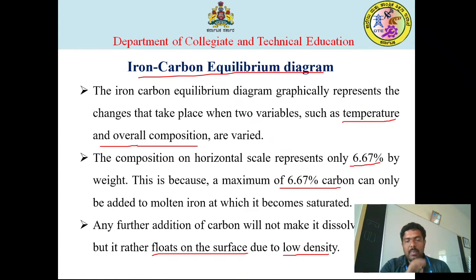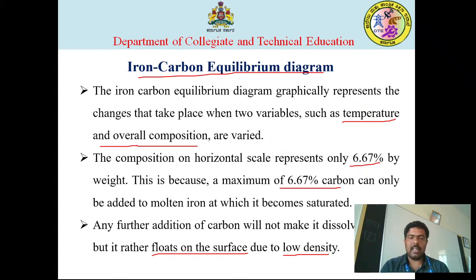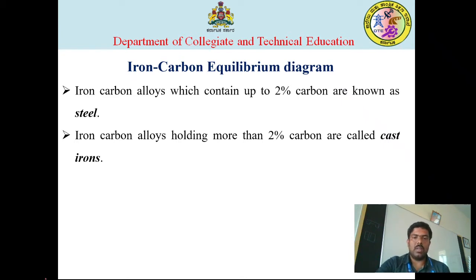What will be the maximum range of temperature on the Y-axis? As already discussed in the cooling curve, 1539 degrees centigrade is the melting point of pure iron. In the iron-carbon equilibrium diagram, the melting point of iron remains the same but the carbon percentage varies from 0 to 6.67%. Iron-carbon alloys up to 2% carbon are known as steel.